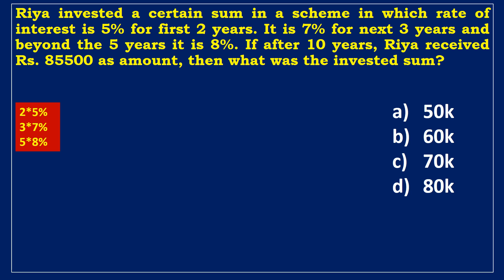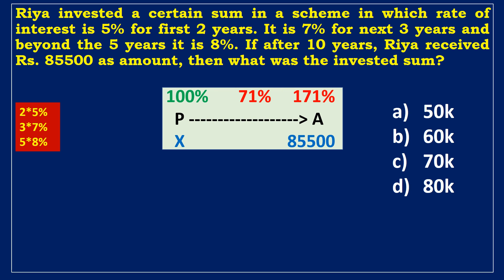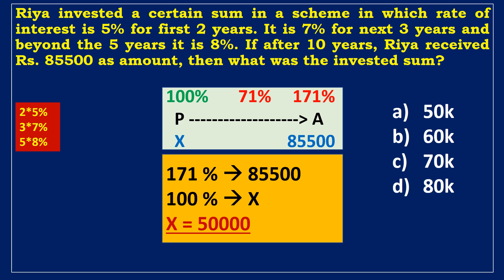Second example. Ria invested a certain sum in a scheme where the rate is 5% for the first two years, 7% for the next three years, and 8% beyond five years. If after 10 years Ria received 85,500 rupees as the total amount, what was the invested sum? The interest rates give: 5%×2 = 10%, 7%×3 = 21%, 8%×5 = 40%, totalling 71%. The total amount equals 100% + 71% = 171%. If 171% = 85,500, then 100% = x. Solving gives the invested sum as 50,000 rupees.